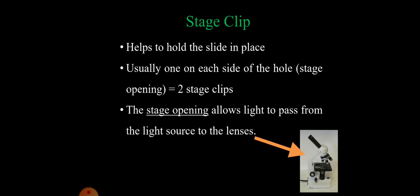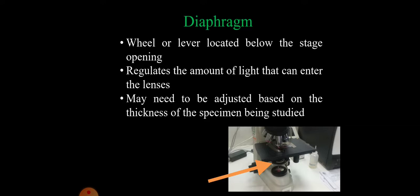Stage openings allow light to pass from the light source to the lens. Diaphragm wheel or lever, located below the stage opening, regulates the amount of light that can enter the glass lenses. May need to be adjusted based on the thickness of the specimen being studied.